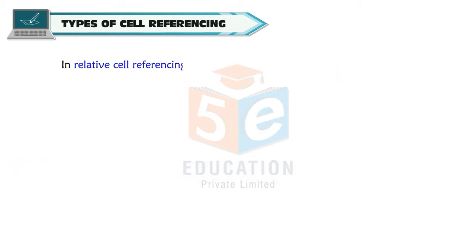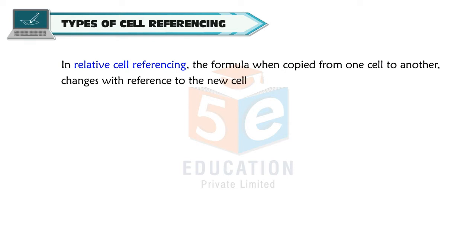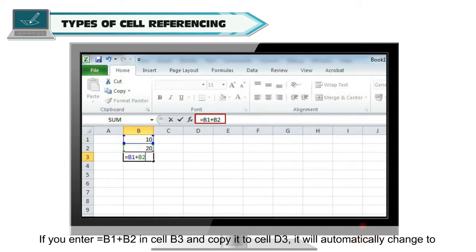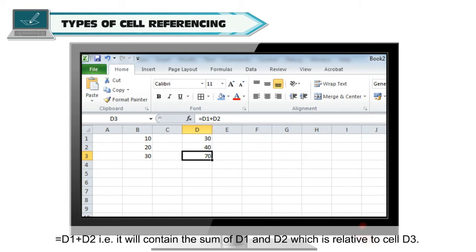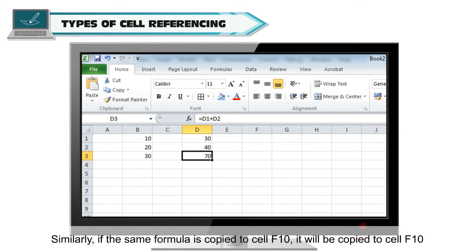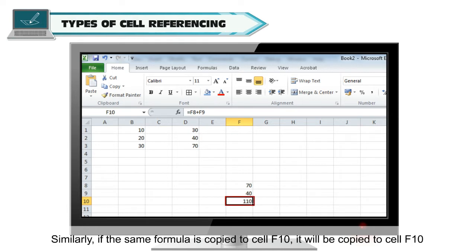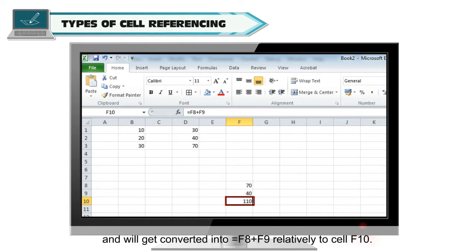In relative cell referencing, the formula when copied from one cell to another changes with reference to the new cell where it is being copied. For example, if you enter =B1+B2 in cell B3 and copy it to cell D3, it will automatically change to =D1+D2. Similarly, if the same formula is copied to cell F10, it will get converted into =F8+F9 relative to cell F10.